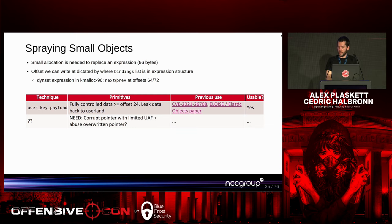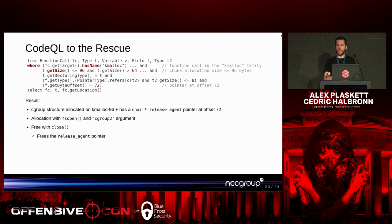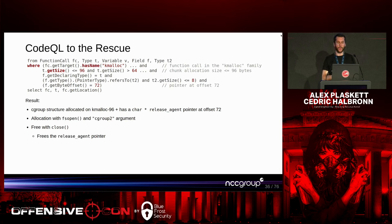To get a better primitive than the limited use-after-free, we need to find an object with an interesting pointer at offset 72 that we can corrupt and abuse. CodeQL is very good for this — you can query for structures allocated with kmalloc in the kmalloc family that allocate into a chunk between 64 and 96 bytes, and that have a pointer at offset 72. We found a cgroup structure allocated on kmalloc-96 that has a character pointer called release_agent at offset 72. We need to be able to allocate it from userland — which we can do with fsopen — and free it with close.